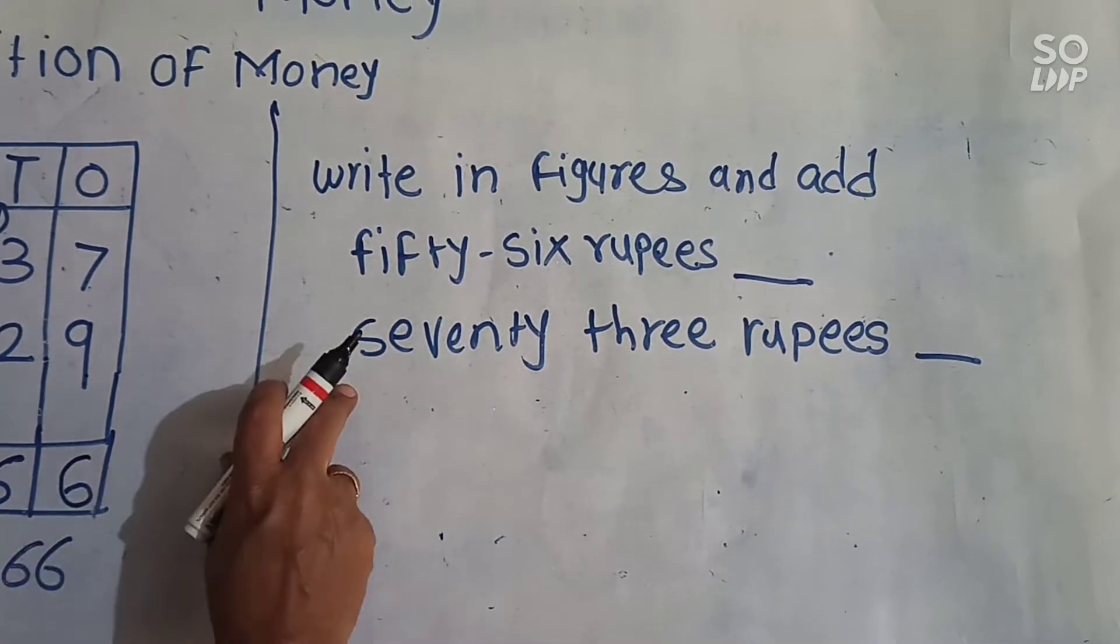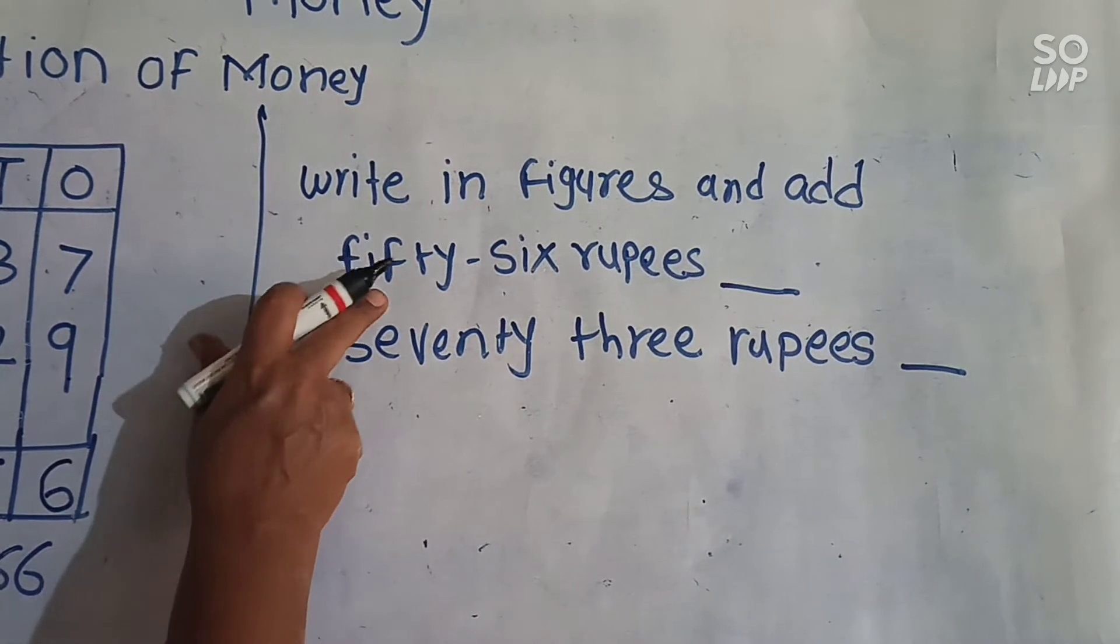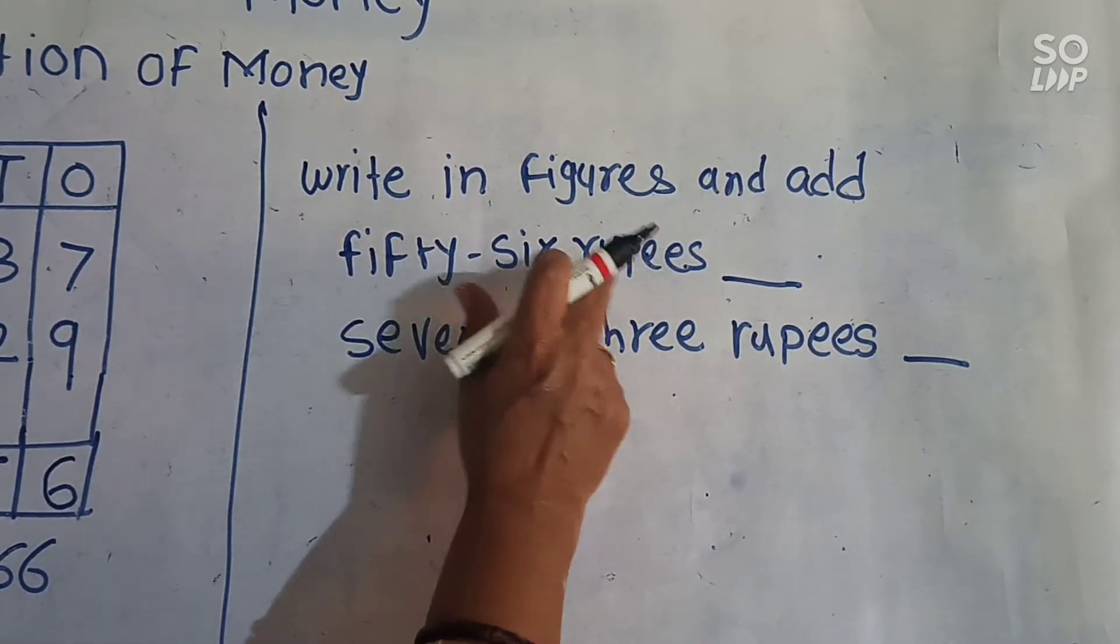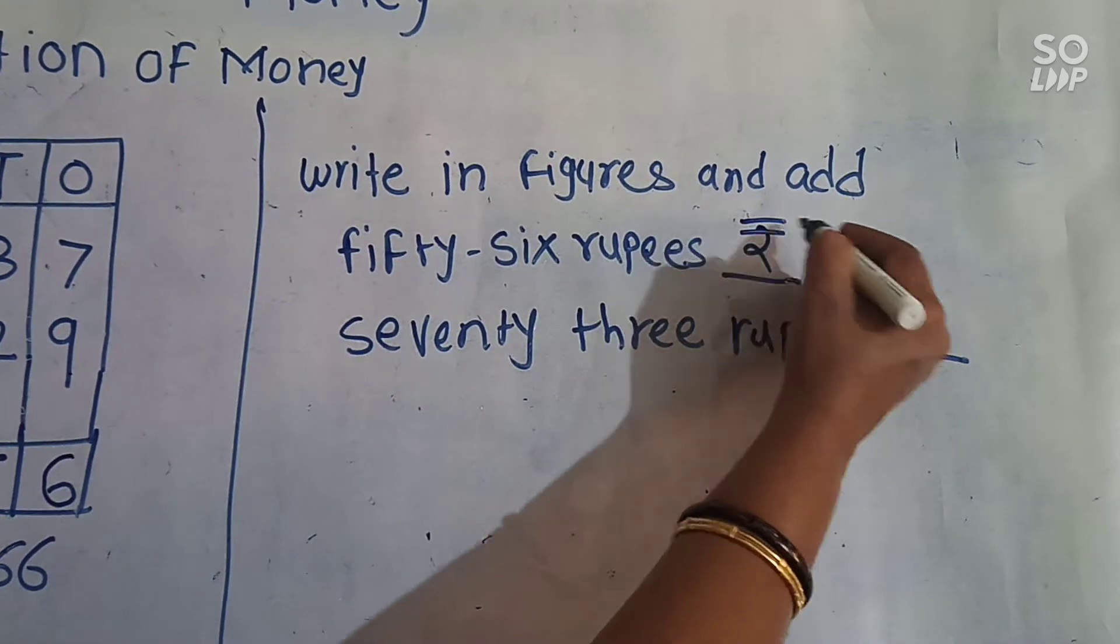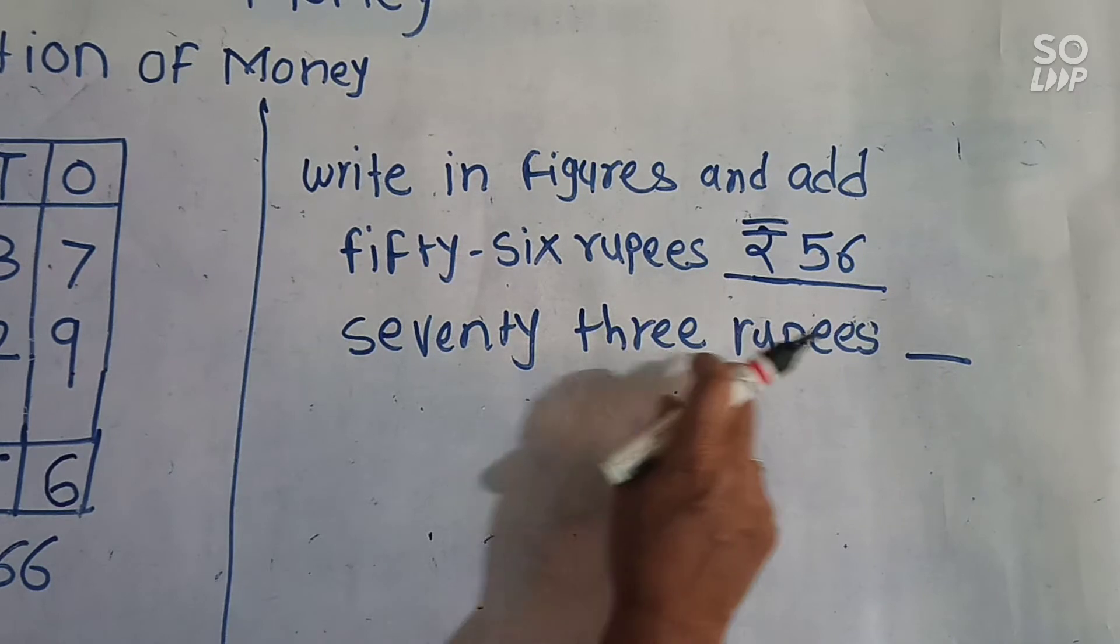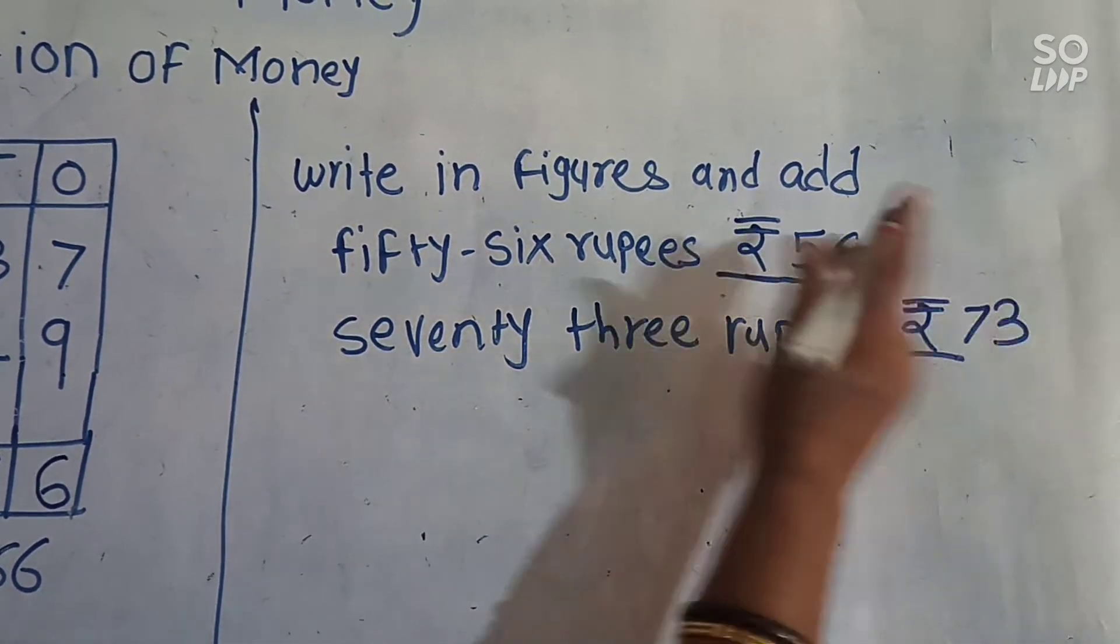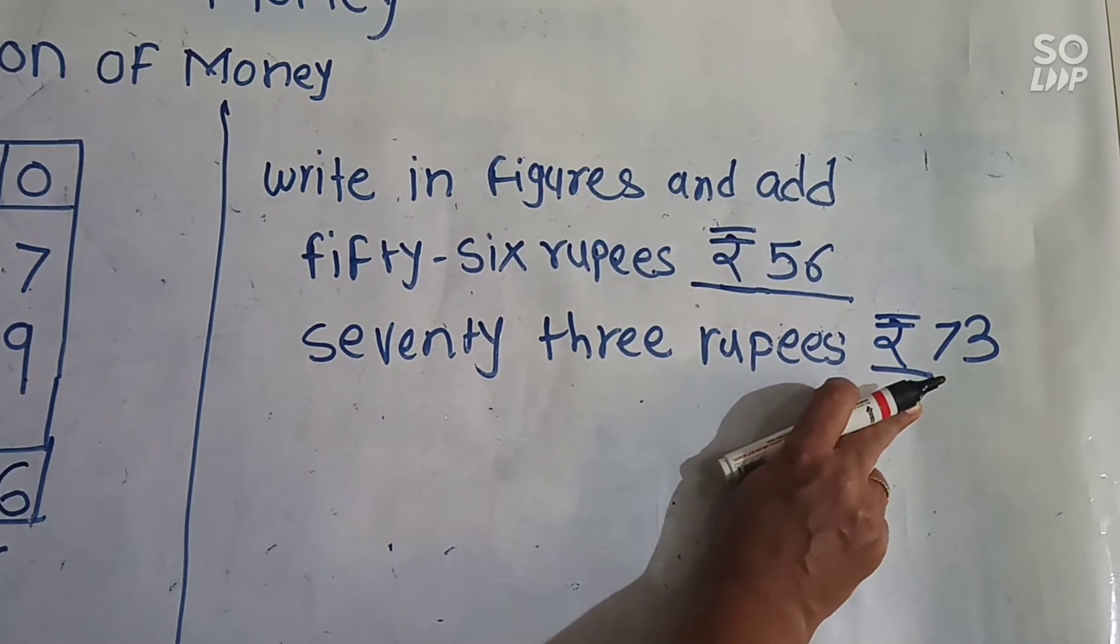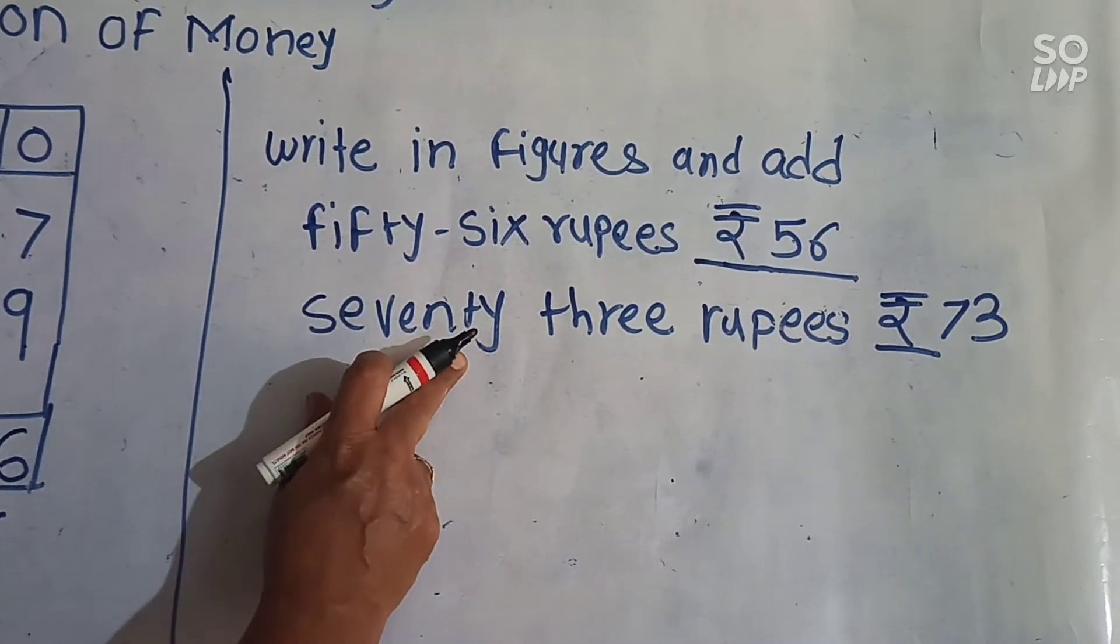Here we have to write in figures and add. 56 rupees. Tell me 56 in figure, rupees 56. Then 73 rupees. 73. This is in figure and this is in word.